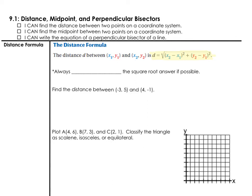Lesson 9.1 is titled Distance, Midpoint, and Perpendicular Bisectors. We're going to learn some new formulas today and utilize ordered pair coordinates on a graph to determine the answers.